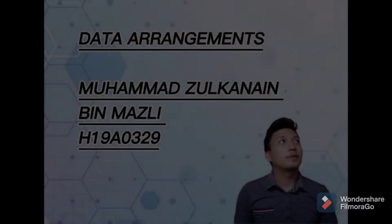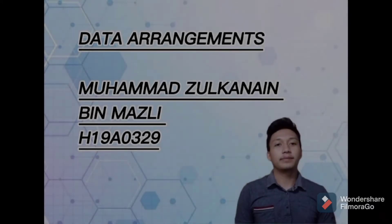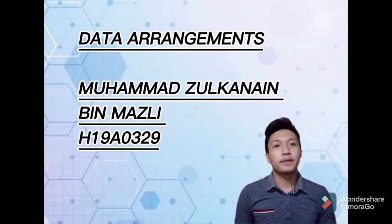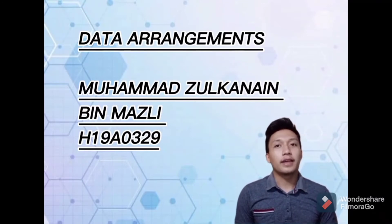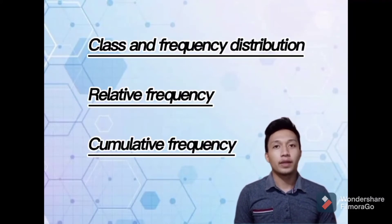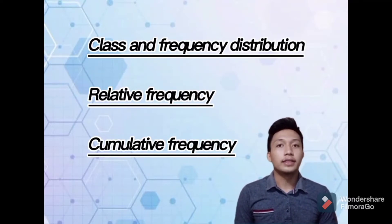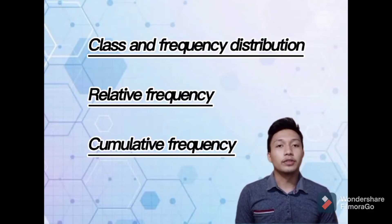I want to explain about data arrangement. Data can be described by using a table and graph. There are three types of tables that can be used to describe the data. One, class and frequency distribution. Two, relative frequency. And three, cumulative frequency.